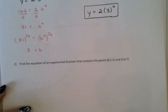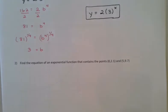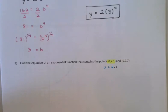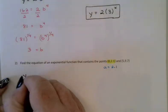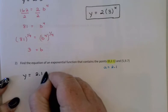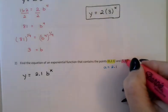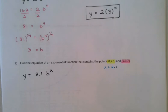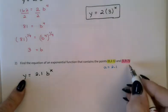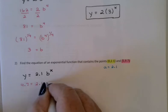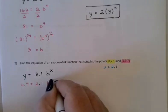Alright. Let's try a similar problem. In number 2, I'm once again given the y-intercept, which is great. (0, 2.1). So I already know that a is 2.1. And that means that y is equal to 2.1 b to the x. The second point I was given this time is (5, 9.7). So I'm going to go ahead and plug that into my equation. And I'll use that information to solve for b. y is 9.7. That equals 2.1 times b to the 5th power.